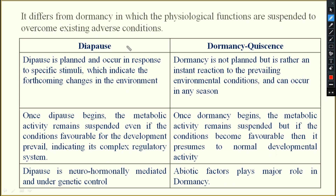What is the difference between diapause and dormancy (quiescence)? Diapause is planned — in response to specific stimuli, the insect anticipates winter and begins diapause in advance. Dormancy is not planned; it is an instant reaction to the prevailing environmental condition. Once diapause begins, metabolic activity remains suspended even if conditions favorable for development prevail, indicating its complex regulatory system.